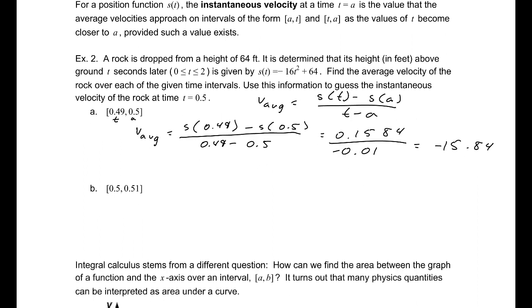Now finding the other side of that, it will be much the same. Find s(0.51) - s(0.5) divided by 0.51 - 0.5. Again, subtracting these, 0.01 is for the denominator and -0.1616 for our numerator, which means our velocity is -16.16. Those are both in feet per second.